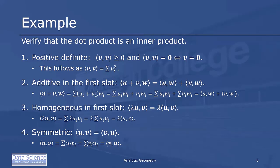We next need to check that it's homogeneous in the first slot, or that the inner product of lambda u and v is equal to lambda times the inner product of u and v. The inner product of lambda u and v is equal to the sum of lambda u_i times v_i, which is lambda times the sum of u_i times v_i, which equals lambda times the inner product of u and v.